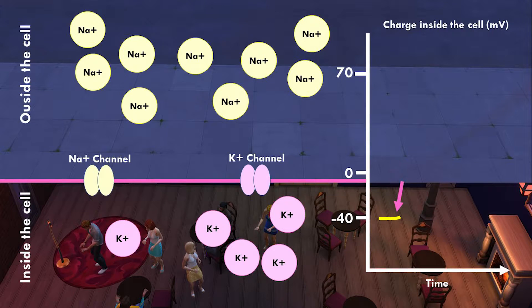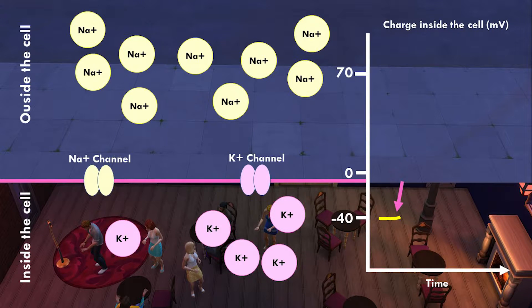The important thing to realize is that an electrical potential is relative. So if one side is more positive, then the other side is more negative. This is how we start off — the inside of the club, or the cell, starts off with a negative electrical potential. Let's say we measure it and it comes in at minus 40 millivolts.